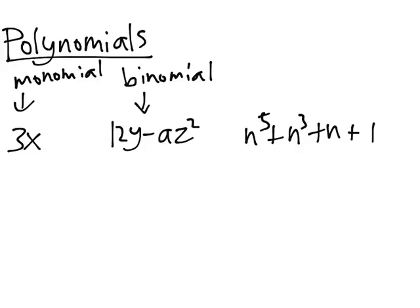Finally, n to the fifth plus n cubed plus n plus 1 has four different terms, so it does not get a special name. An important property of all polynomials is its degree.